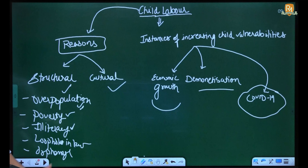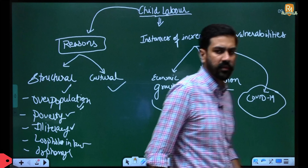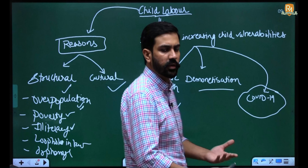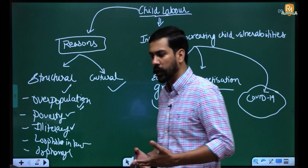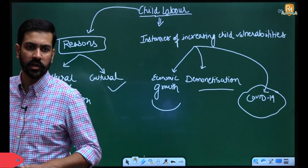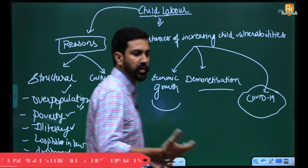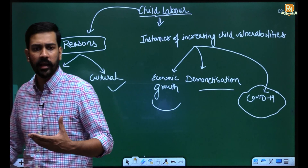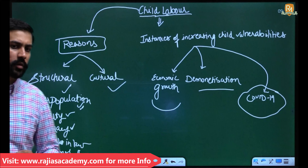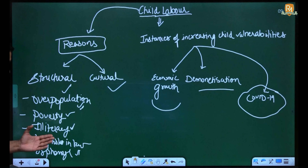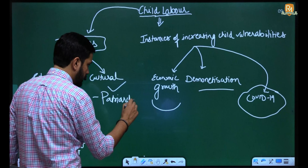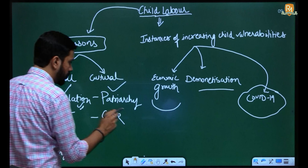Then there is the case of orphanage, as recently witnessed with COVID-19. If a child is alone and has no economic resources, he or she needs to survive somehow and cannot afford the luxury of education first. They need basic income for food and shelter — for that purpose the individual has to indulge in child labor activity. So the structural factors are: overpopulation, poverty, illiteracy, loopholes in law, and orphanage.